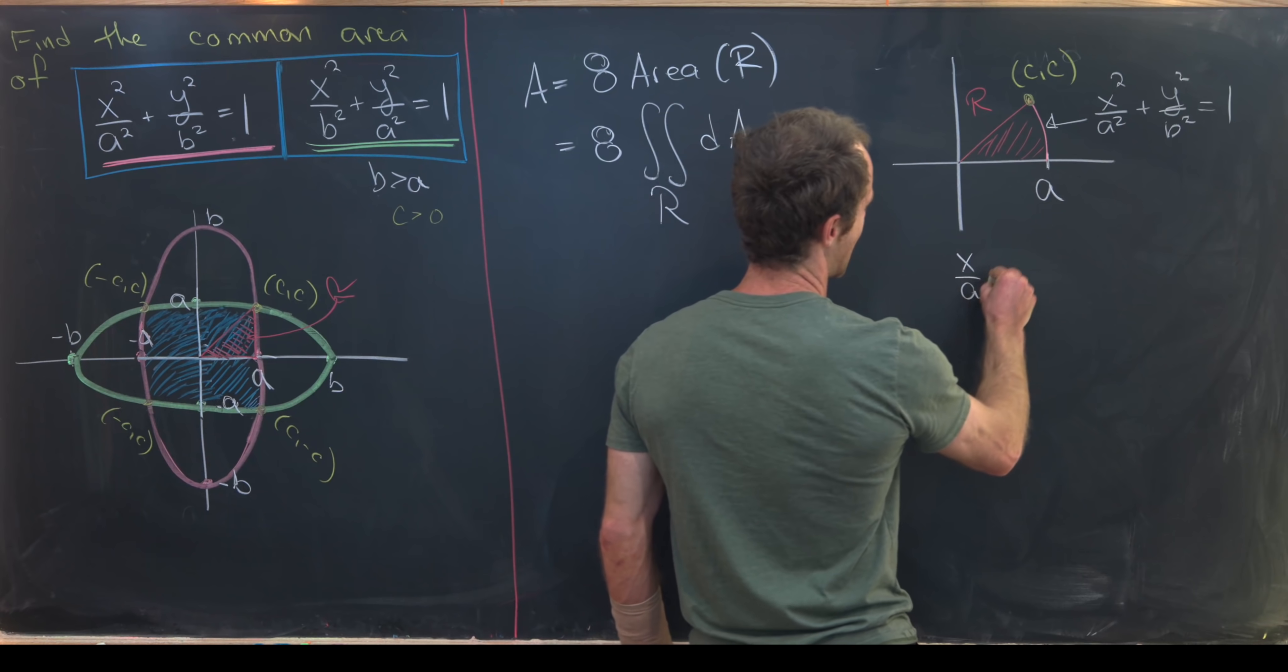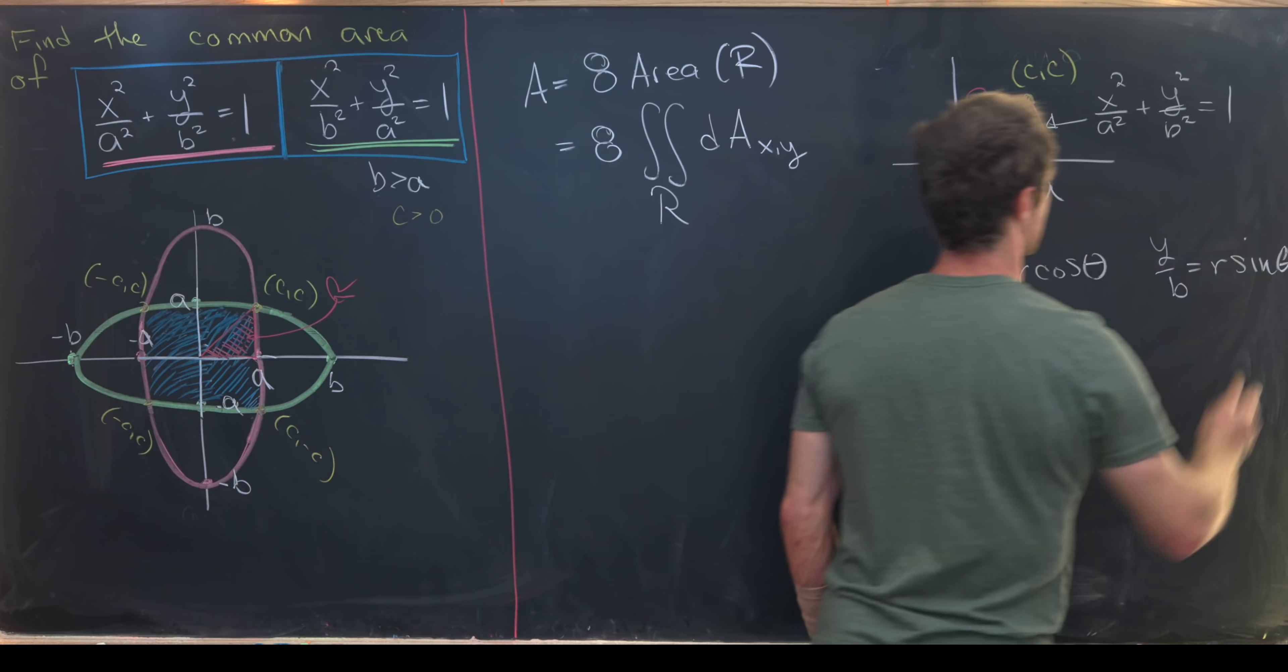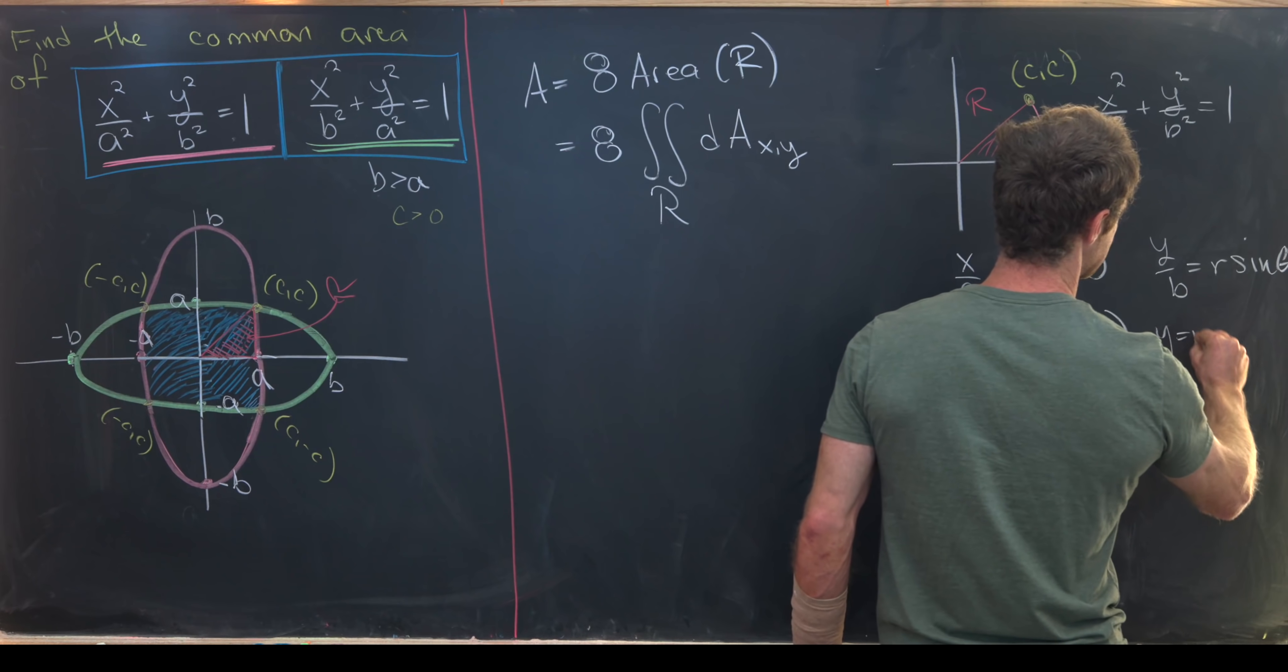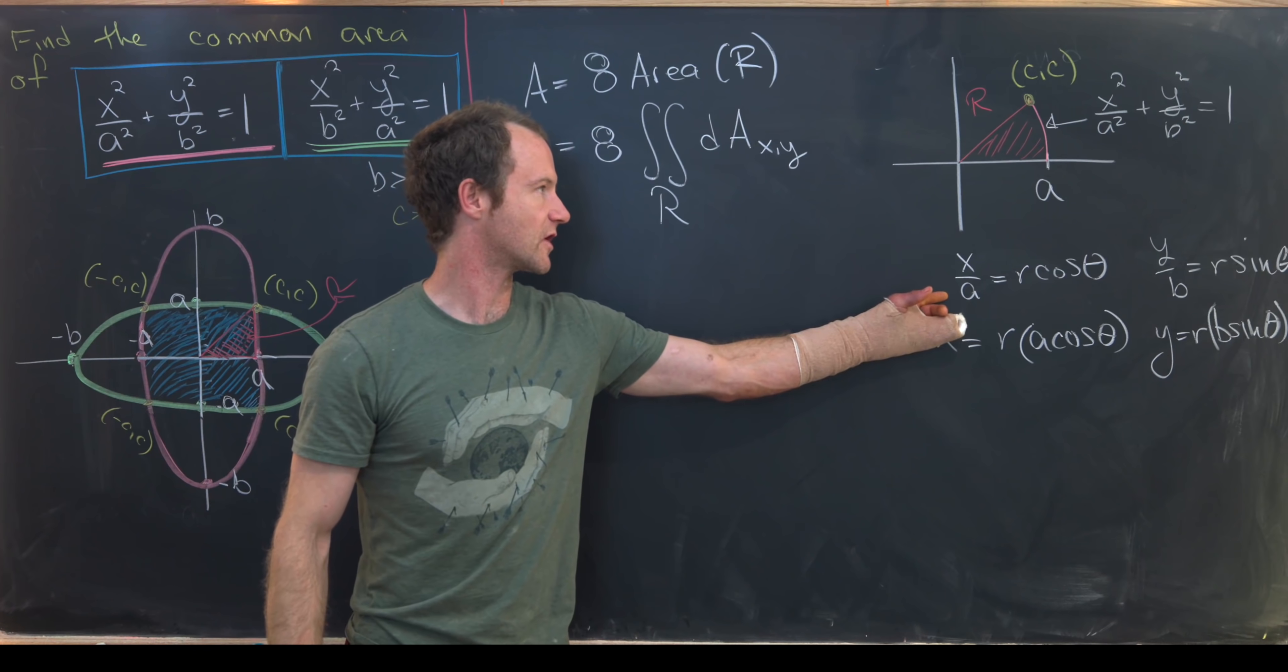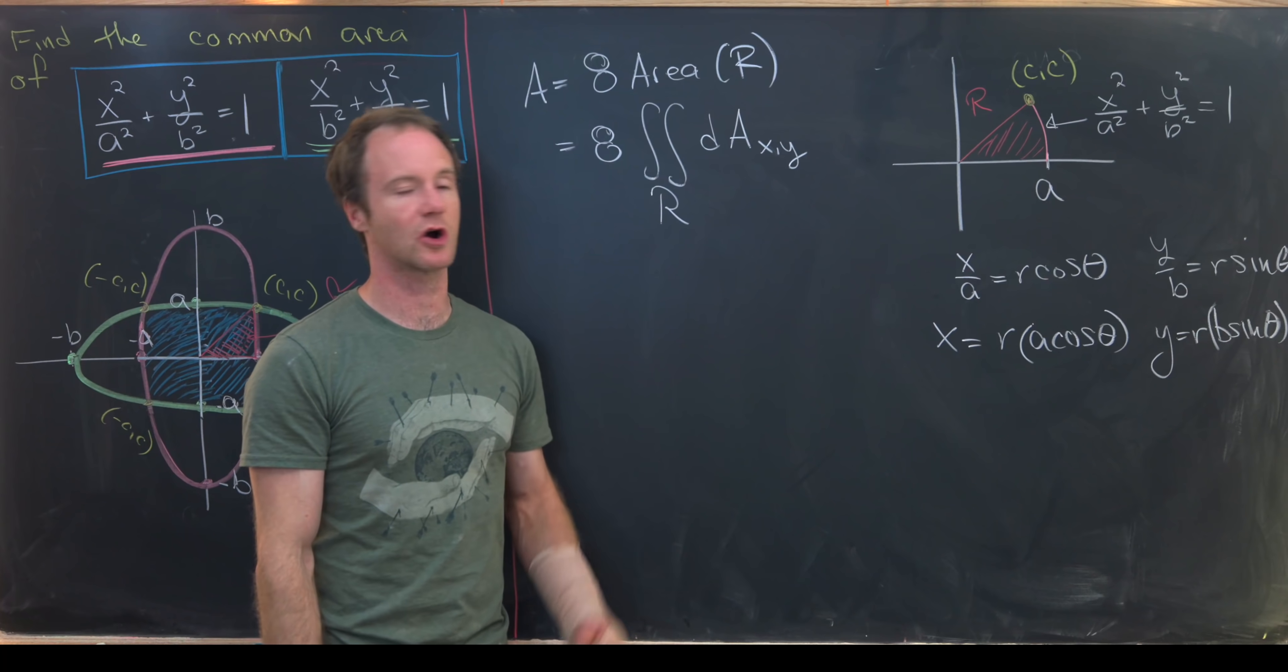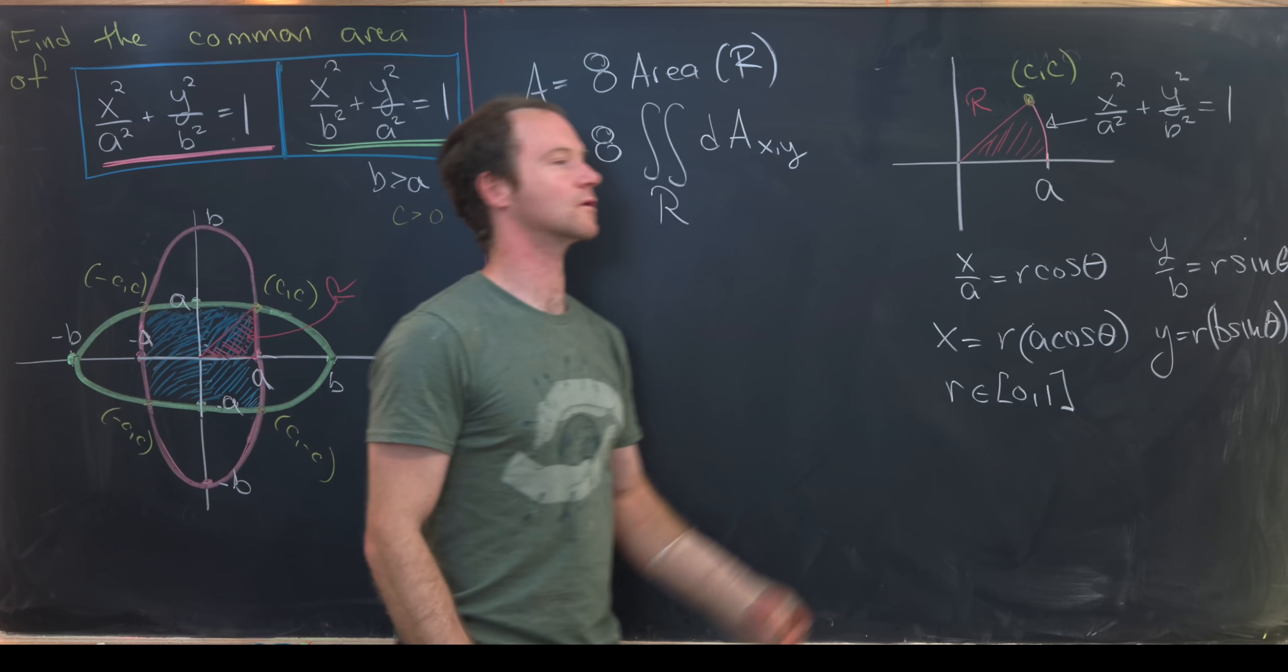Maybe we'll set x over a equal to r cosine theta and y over b equal to r sine theta. That means x equals r times a cosine theta and y equals r times b sine theta. Notice that x squared over a squared plus y squared over b squared will be equal to r squared cosine squared plus r squared sine squared, which is just r squared. So that gives us some idea that r should range from 0 to 1.